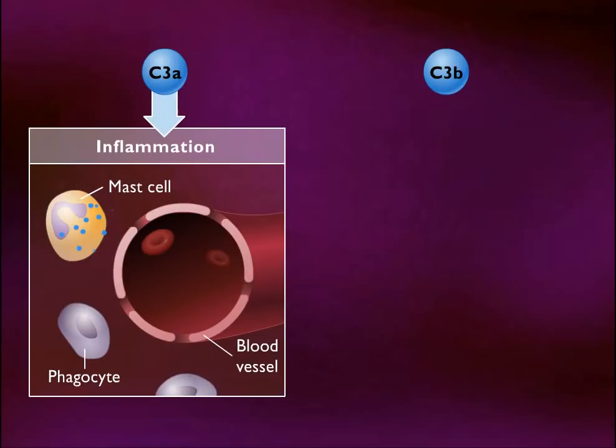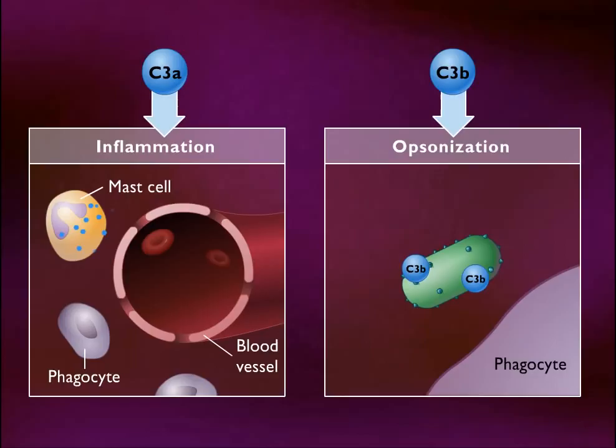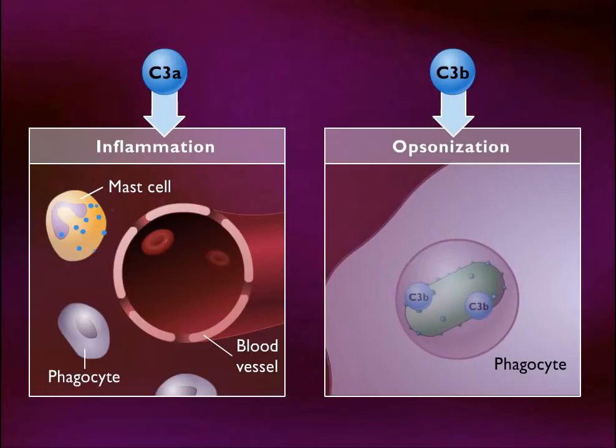Both pathways of complement activation follow the same sequence after cleavage of C3. C3A is involved in stimulating inflammation. C3B reacts with other complement components to form C3-convertase, which forms more C3A and C3B. C3B also attaches to the surfaces of microorganisms. Phagocytes have a binding site for C3B, so microorganisms with C3B bound to their surfaces are more susceptible to phagocytosis. Coating of bacteria to make them more susceptible to phagocytosis is called opsonization.